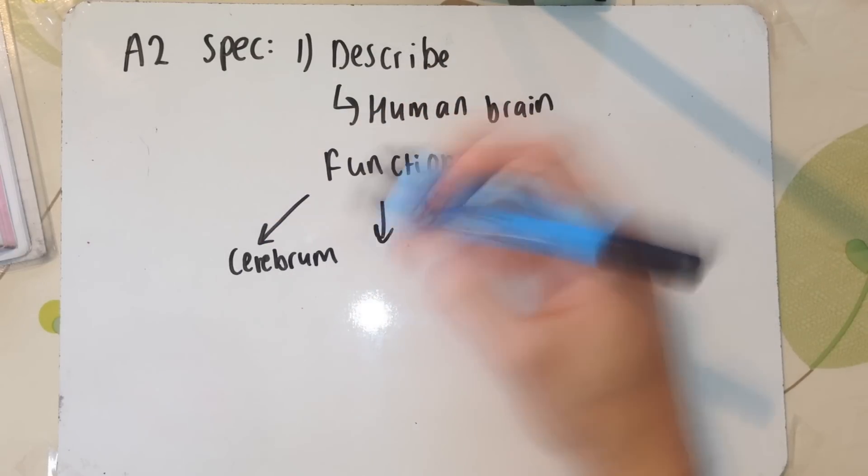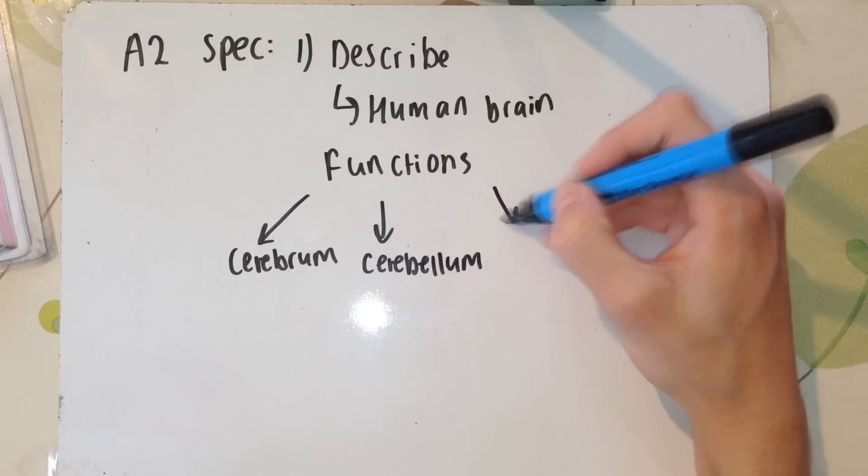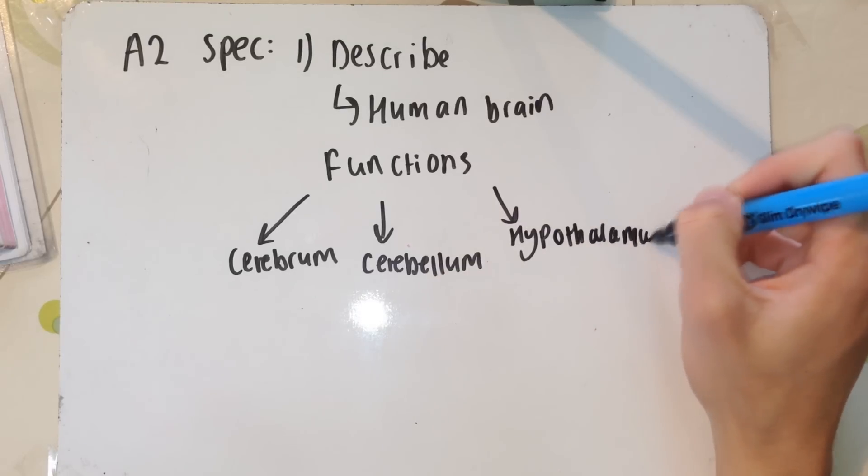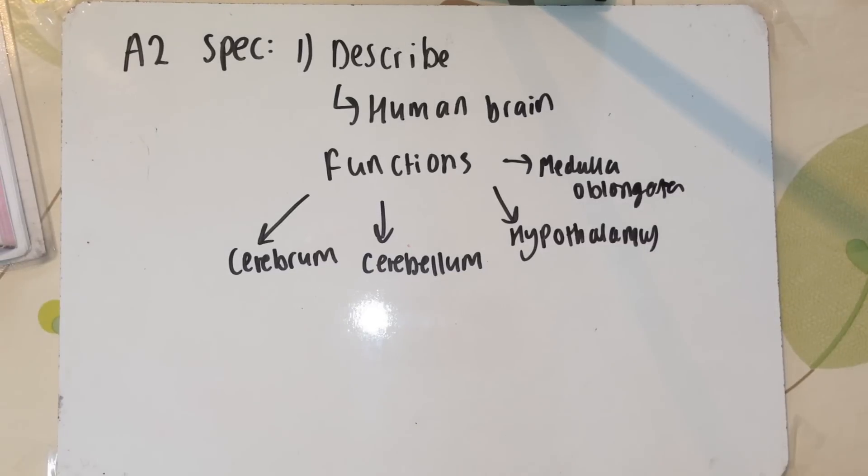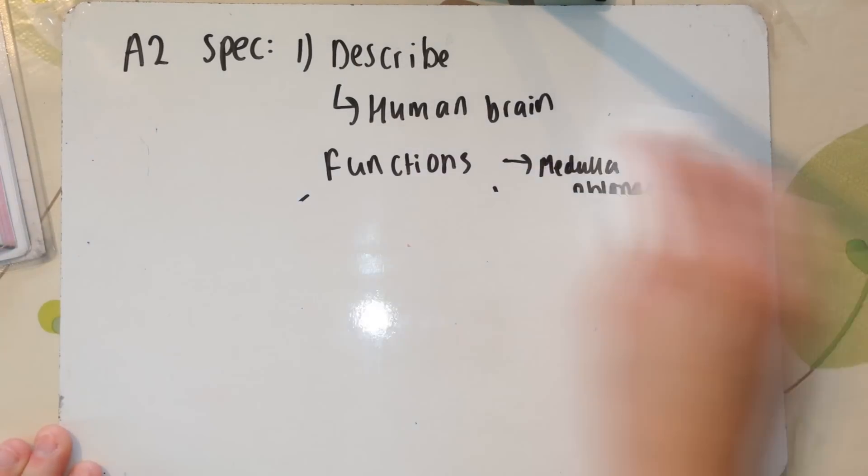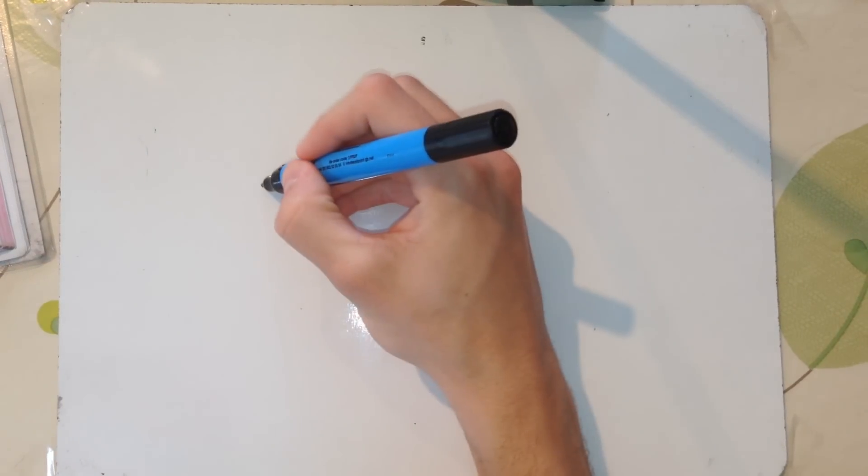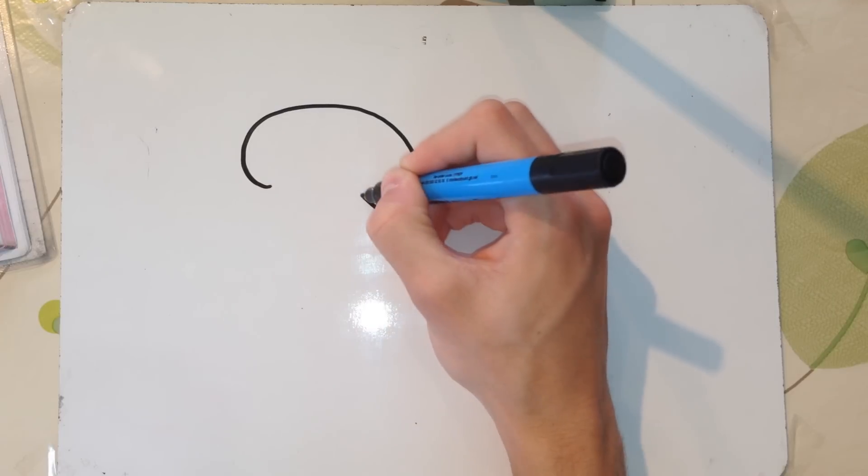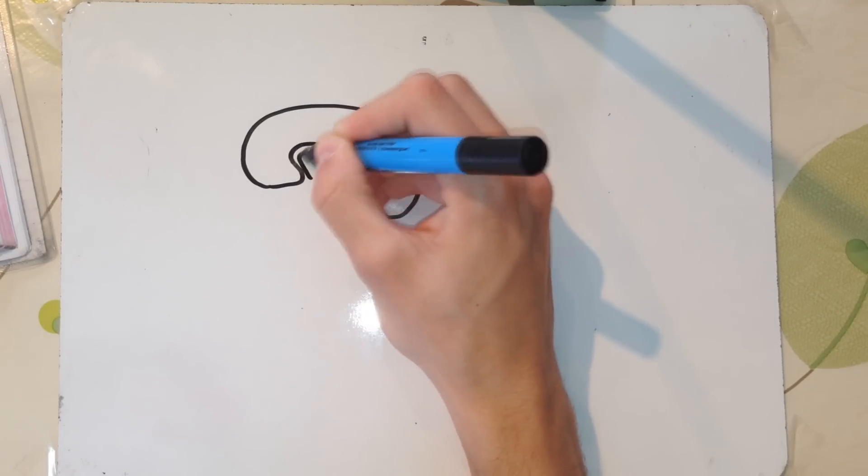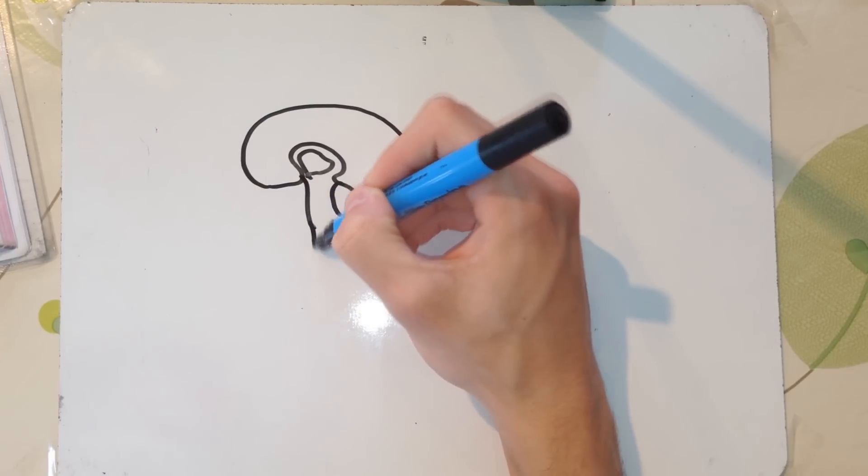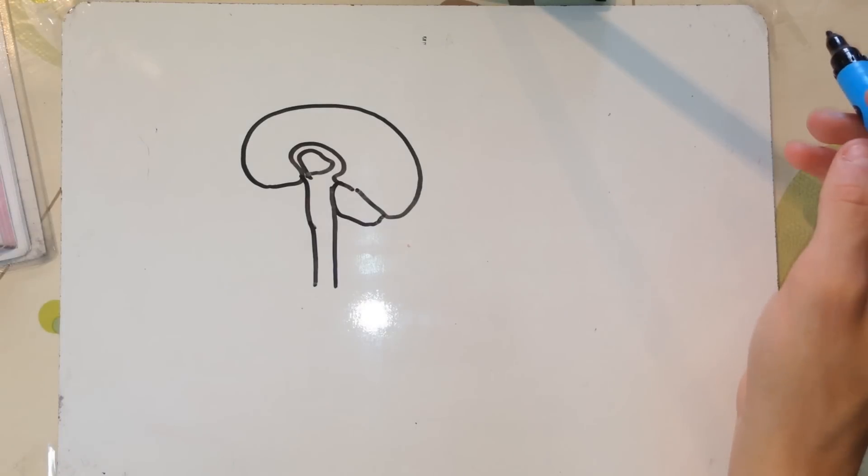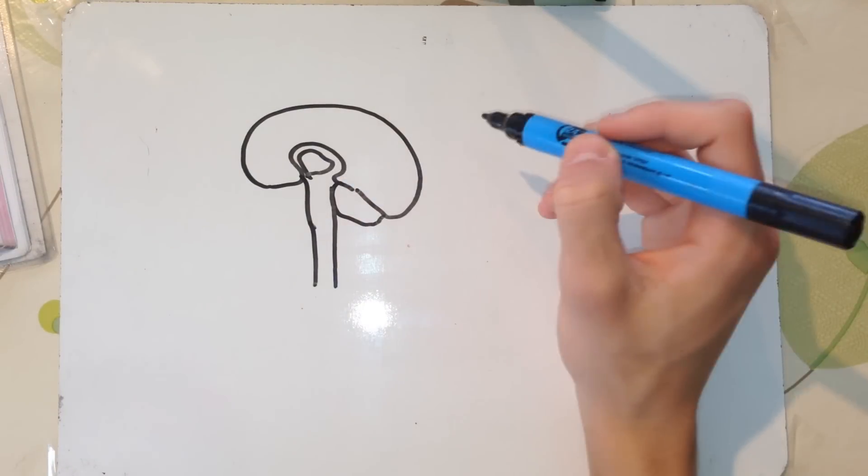The first being, describe with the aid of diagrams the gross structure of the human brain, and outline the functions of the cerebrum, cerebellum, medulla oblongata, and the hypothalamus. So, as you can tell, I'm obviously no artist at all, so I would definitely recommend going on Google or looking up some more detailed pictures. But I'm basically showing you the gross structure of the brain, like it wants to know in the specification. But yeah, I really am no artist, so don't take my word as this is 100% an accurate brain.